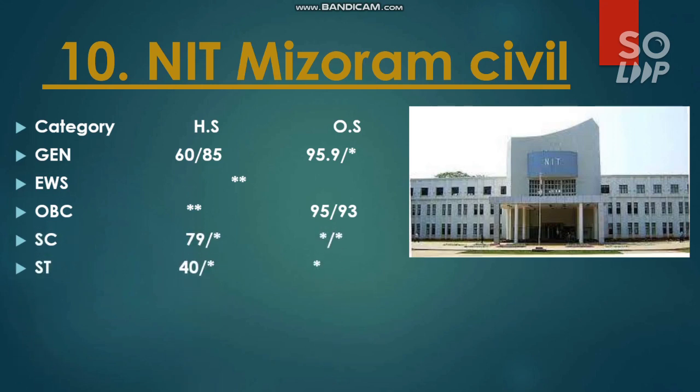That covers all 10 NITs where you can get admission at a lower percentile. I discussed the branch with the lowest possible cutoff in each NIT. This is the minimum percentile you need to score to get into an NIT. Thanks for watching this video.